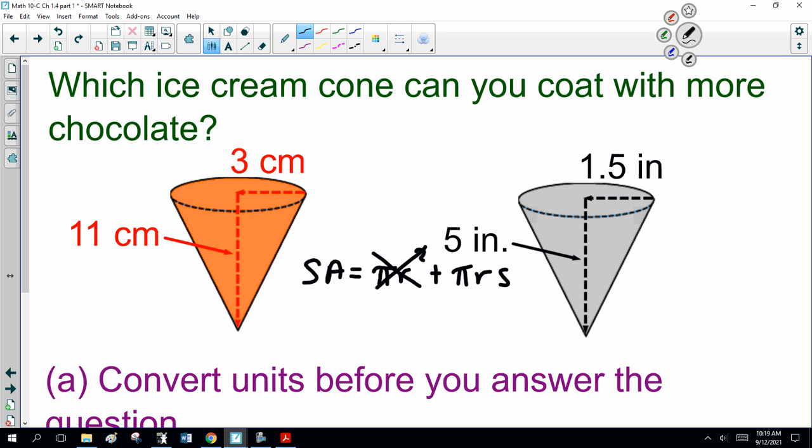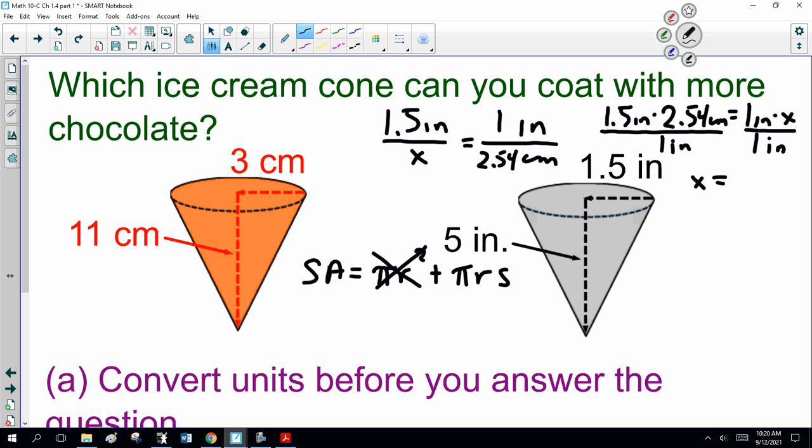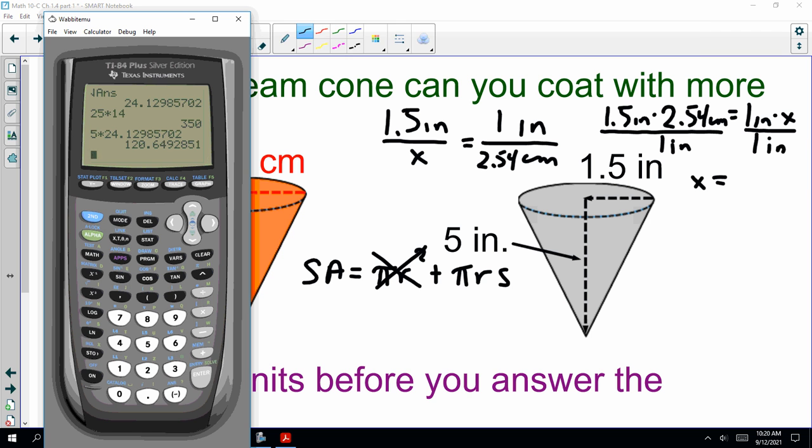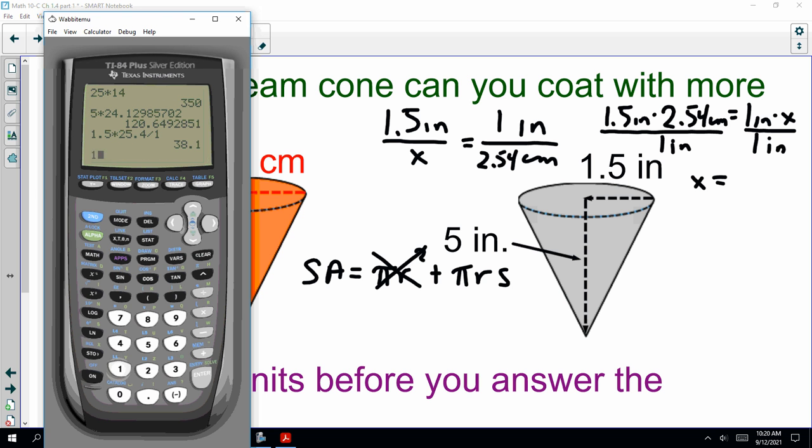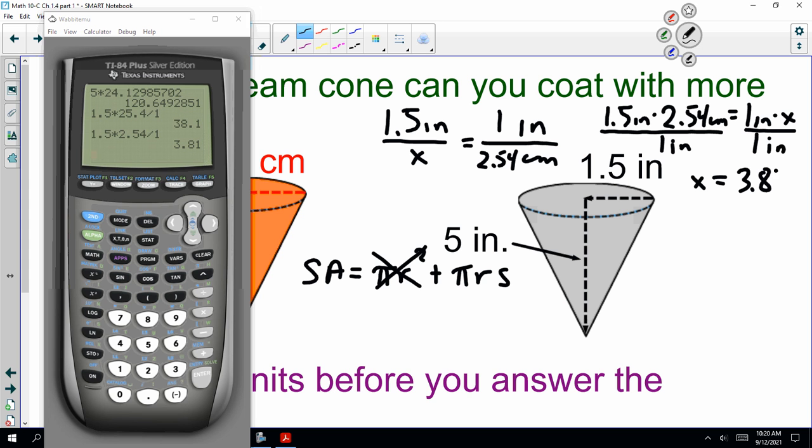Now, I said we have to convert units before you answer the question. Inches to centimeters, centimeters to inches, doesn't really matter. I'm going to convert inches to centimeters. So, 1.5 inches over x equals 1 inch over 2.54 centimeters. I have to cross multiply. So, 1.5 inches times 2.54 centimeters equals 1 inch times x. Divide both sides by 1 inch. So x is 1.5 times 2.54 divided by 1, which is 3.81 centimeters.